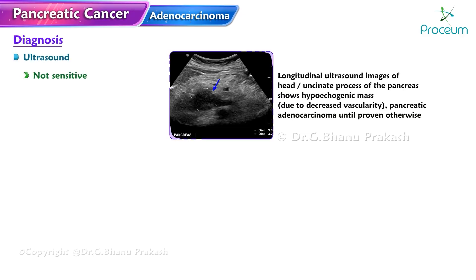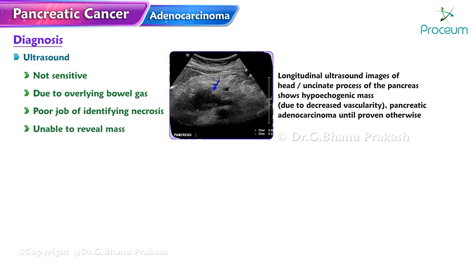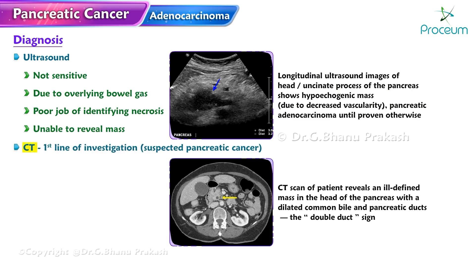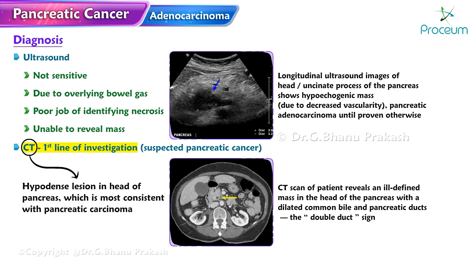Ultrasound is not as sensitive due to overlying bowel gas and does a poor job of identifying necrosis; ultrasonography is often unable to reveal the mass. This makes computerized tomography the first-line investigation in a patient with suspected pancreatic cancer. A CT scan demonstrates a hypodense lesion in the head of the pancreas, which is most consistent with pancreatic carcinoma.